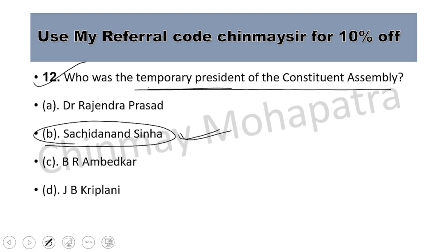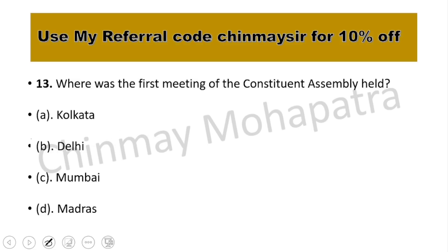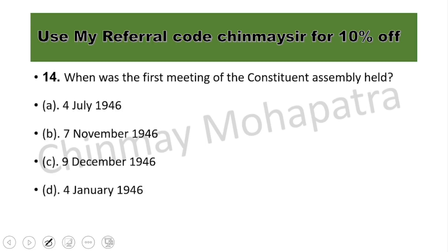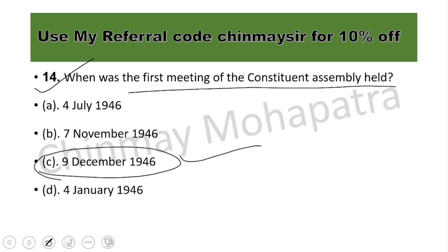The temporary president was Satchitananda Sinha, not Rajendra Prasad. Question number 13: Where was the first meeting of the constituent assembly held? The right answer is Mumbai. Question number 14: When was the first meeting of the constituent assembly held? The right answer is 9th December 1946.